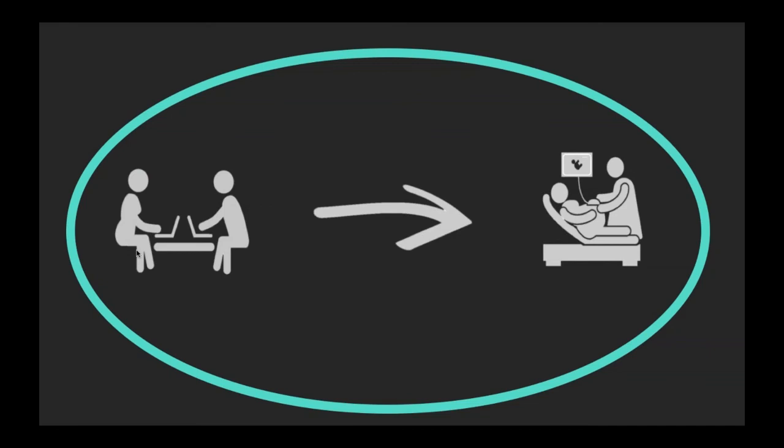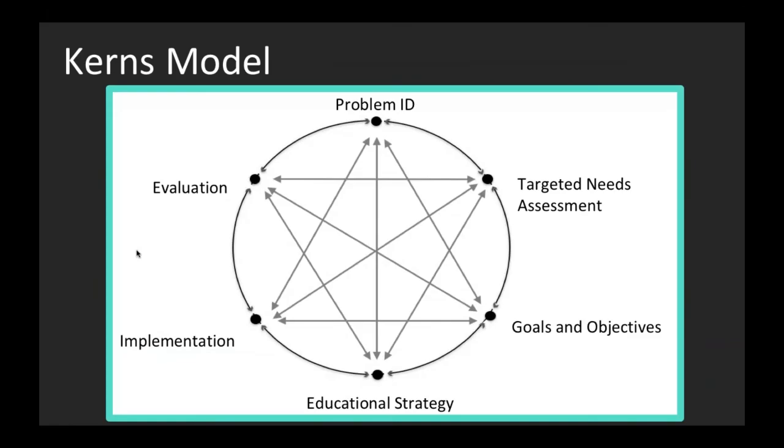There are many theories and frameworks for curriculum development, but the prevailing framework most common in medical education is Kern's. The Kern's model for curriculum development has six steps: problem ID, targeted needs assessment, developing goals and objectives, developing educational strategy, implementing your strategy, evaluating your curriculum, and then feeding forward into the problem ID. This is presented in a circle because it's a circular iterative process, but every step informs every other step.